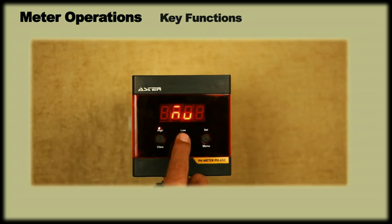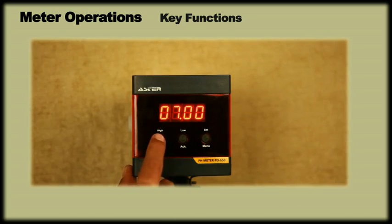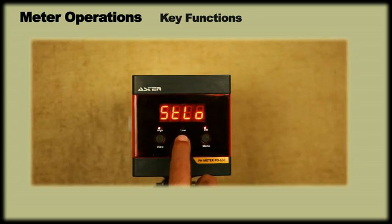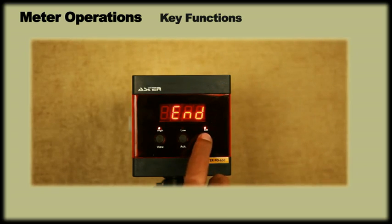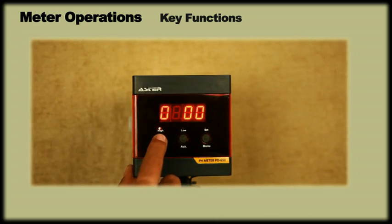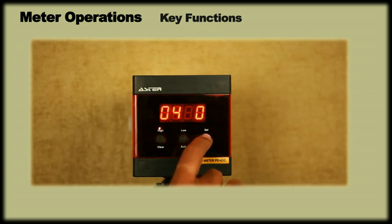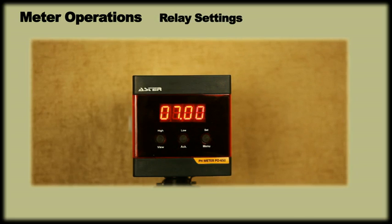The ACK key displays millivolt and resets the relay in case of fault. The menu key is used for high and low relay settings. While programming, the view key can be used to right shift, the ACK key for increment and menu key to enter and save the setting.